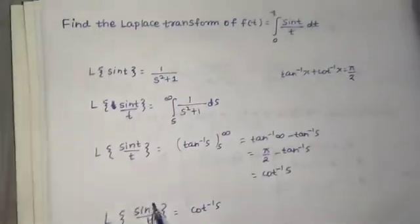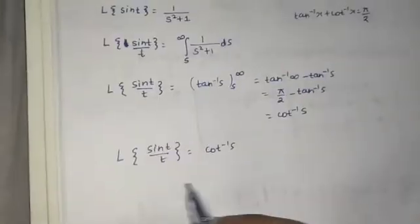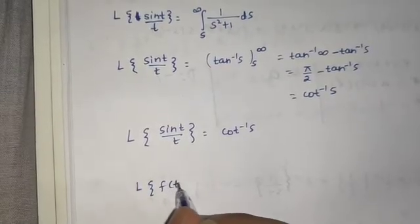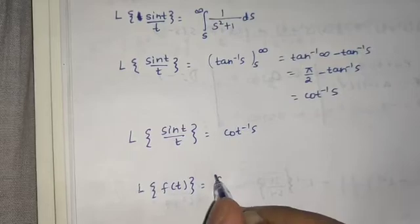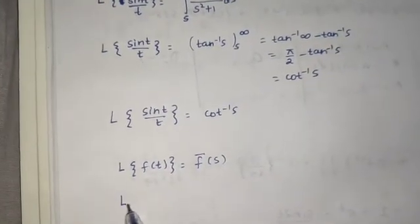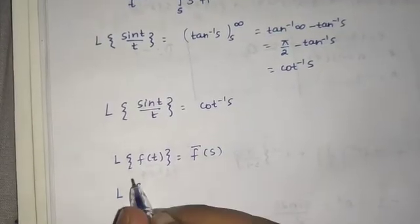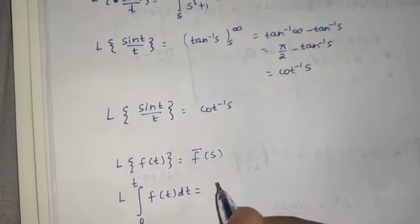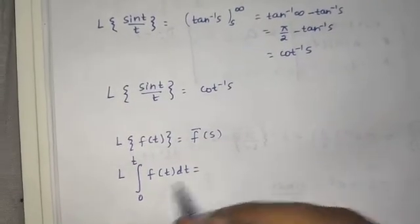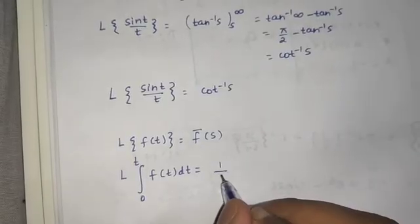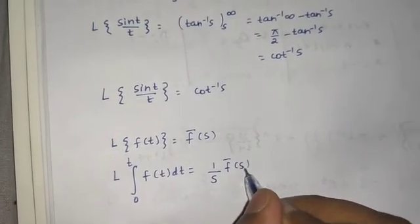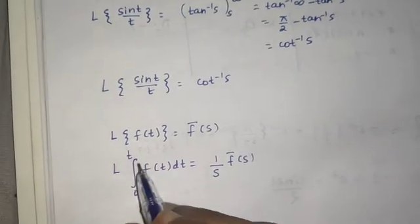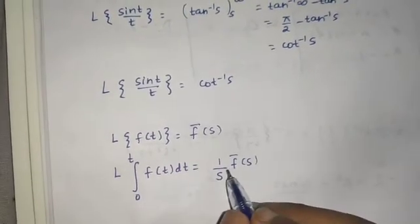Now we need to find the integral from 0 to t of this. There is a rule: if the Laplace of f(t) is F(s), then the Laplace of the integral from 0 to t of f(t) dt is simply F(s) divided by s — divide by s once for one integration, by s² for two integrations, by s³ for three, and so on.